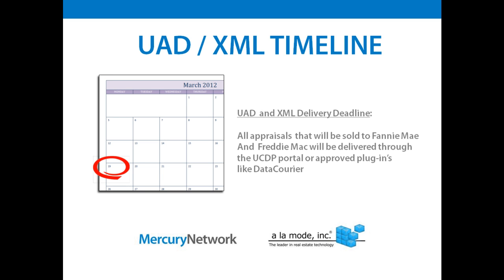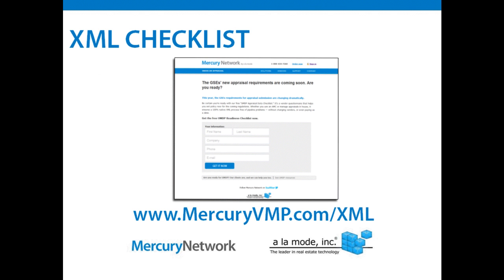March 19th, 2012 is the day that Fannie and Freddie will start receiving all appraisals completed after December 1st, 2011, through their UCDP portal. This is when lenders only sending the PDF will be facing that service charge in order to convert the PDF to XML. So if you're unsure if your appraisers are ready, it's important to act now.